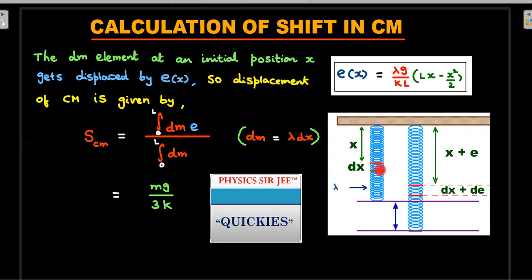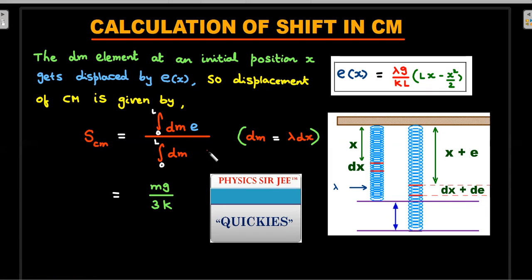Each dm element of length dx at position x has been displaced downward by e. So each dm has its own e displacement. The displacement of the center of mass is: integral of (dm × its displacement) divided by total mass — the standard formula. Substituting dm = lambda·dx, lambda cancels, and substituting the expression e(x), integrating from 0 to l — integrating x and x²/2 — you end up getting mg/3k.